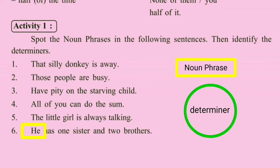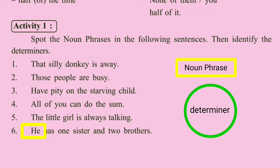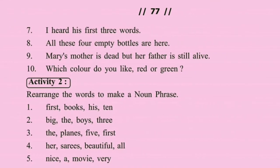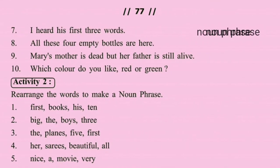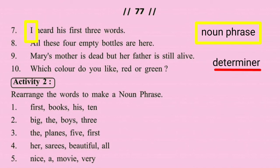He is also a noun phrase — a single word, a pronoun, may be a noun phrase having no pre-modifiers. Similarly, 'I hear he is first' contains three noun phrases: 'I' (a pronoun noun phrase), 'he' (another pronoun noun phrase), and 'his first three words' — where 'his' is a possessive determiner, 'first' is an ordinal determiner, and 'three' is a cardinal determiner.